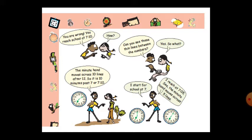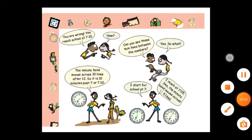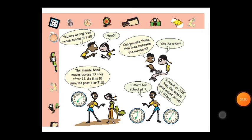That boy is saying: I start for school at 7, and I reach at 7:05. The minute hand moves across 5 lines from 12 up to 1, so it is 5 minutes. If you count from 12 up to 1, you will get 5 thin lines, so it is 5 minutes.